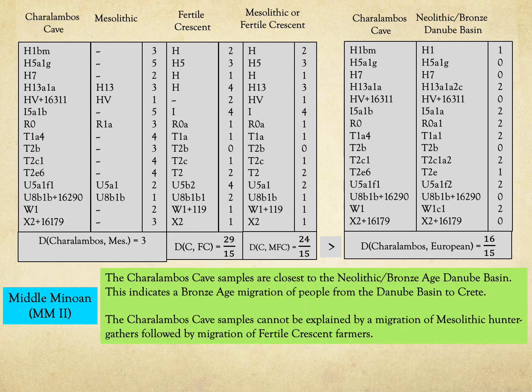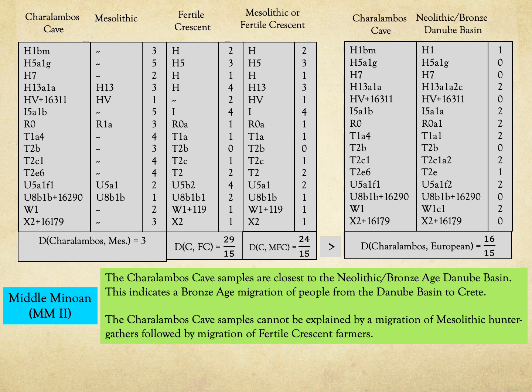This indicates a Bronze Age migration of people from the Danube Basin to Crete. The inclusion of the union of Mesolithic and Fertile Crescent data indicates that the Kharalambos cave samples cannot be explained by a migration of Mesolithic hunter-gatherers followed by a migration of Fertile Crescent farmers. We can also see that the Odigitria samples are closer to Fertile Crescent and Copper Age Spain samples than to Neolithic and Bronze Age Europeans. Since the Fertile Crescent migration reached Spain by 5000 BC, the haplogroup found in Spain may also originate from the Fertile Crescent.